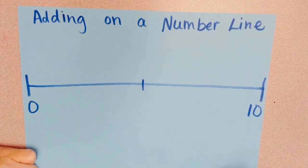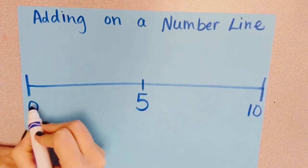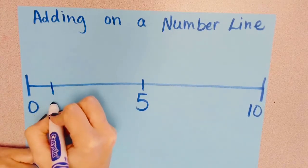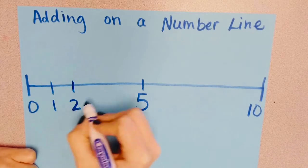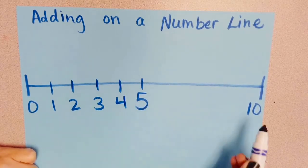I'm going to first start with a number that goes in the middle. What number is exactly in the middle of 0 and 10? 5. Let's do the numbers between 0 and 5. And the numbers after 5.